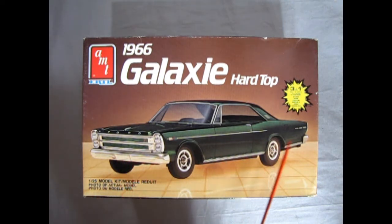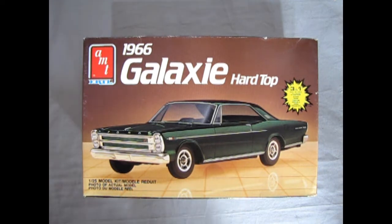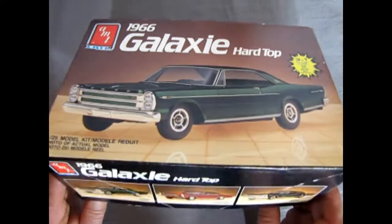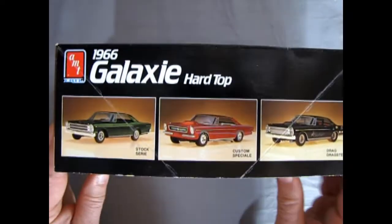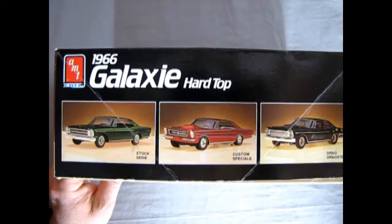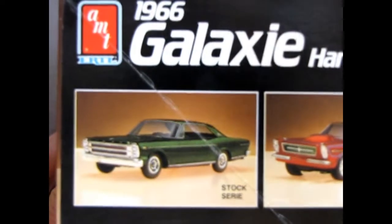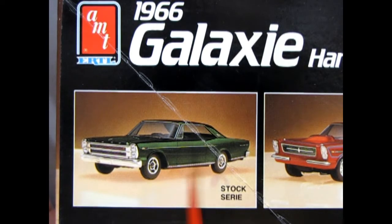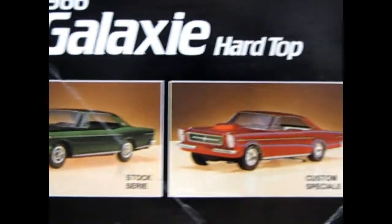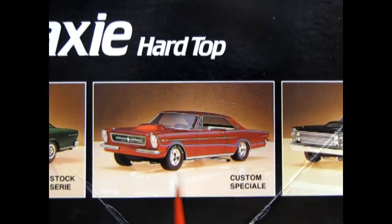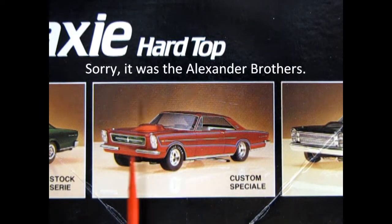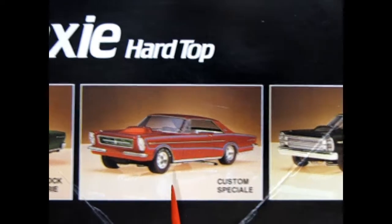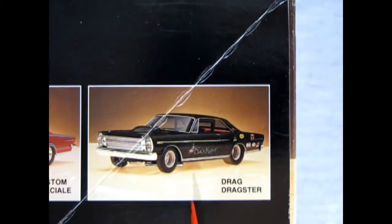As you can see, this shares a lot of body style with the Ford Fairlane from last week. But this is one of the bigger galaxies. Let's take a look at the side of the box. This is an older AMT kit. You can see we get the nice metallic green Galaxy - I always liked that color on this car. Then we get this custom version. I believe George Barris had his hand in on this one.